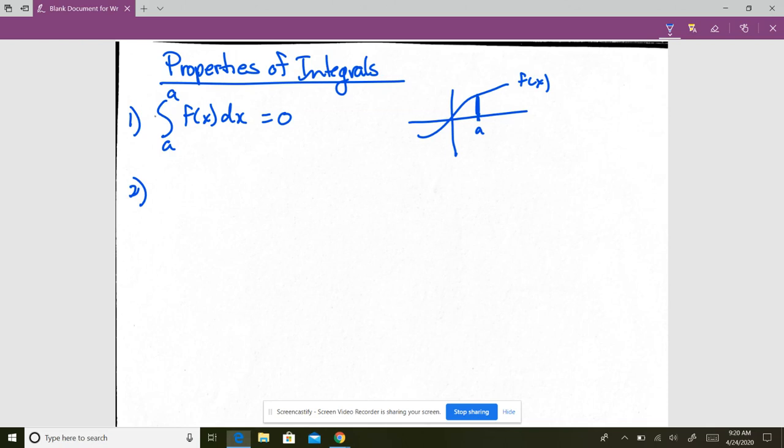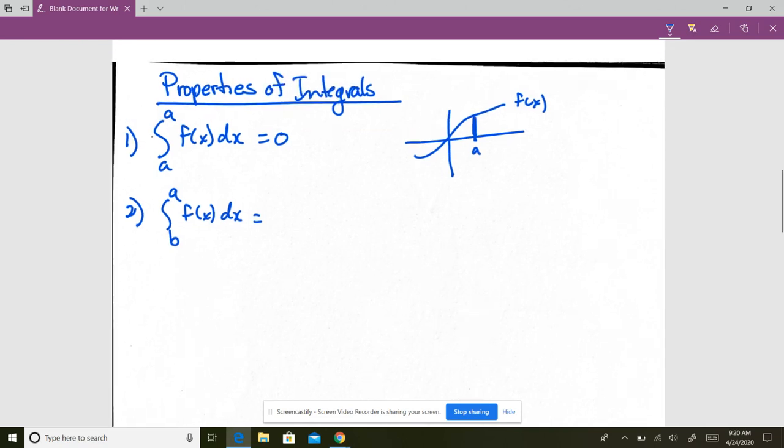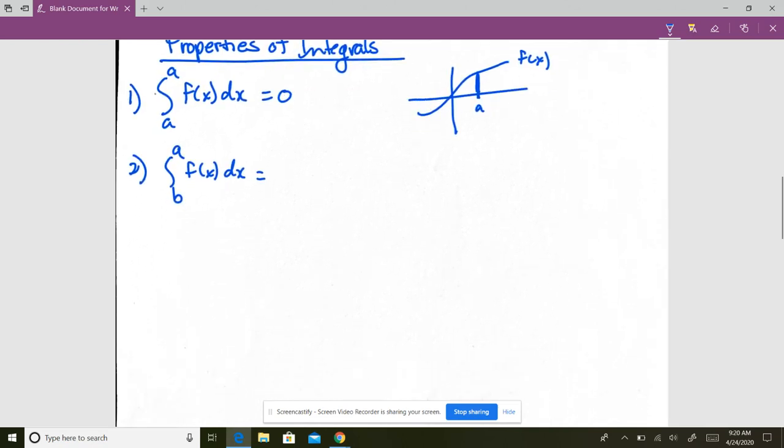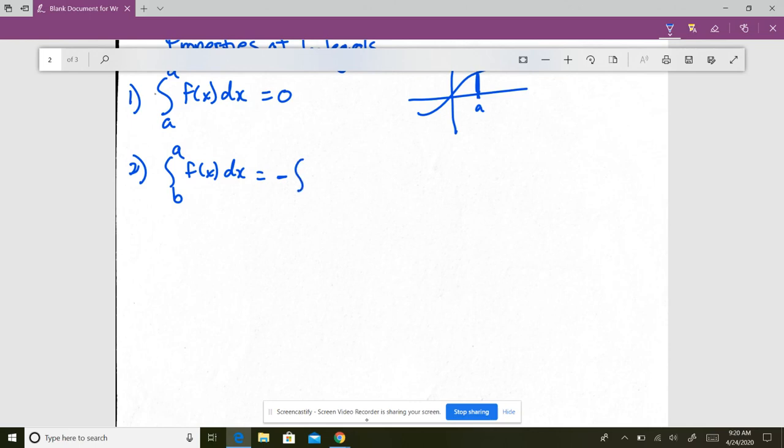Integral from b to a of f of x dx. Now, evaluating integrals, usually it's always a to b. The lower bound is always going to be smaller than the upper bound. So, you can switch those numbers. And when you do, the value of the integral becomes negative. So, the negative integral from a to b.